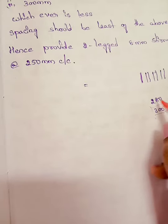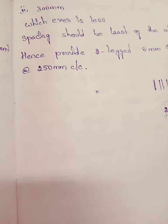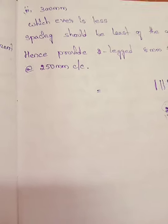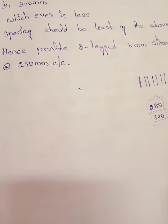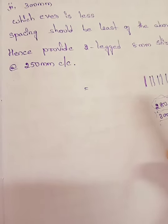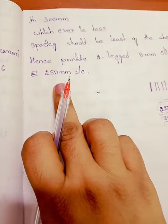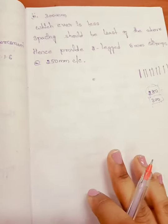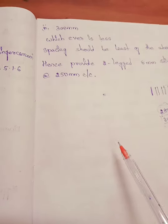For dimensions like breadth and depth, you can increase — if breadth required is 280 mm, you can take it as 300 mm and it will be safe. But you should not take less than the required value for dimensions and loads. For spacing, however, you can slightly decrease but you should not increase it.